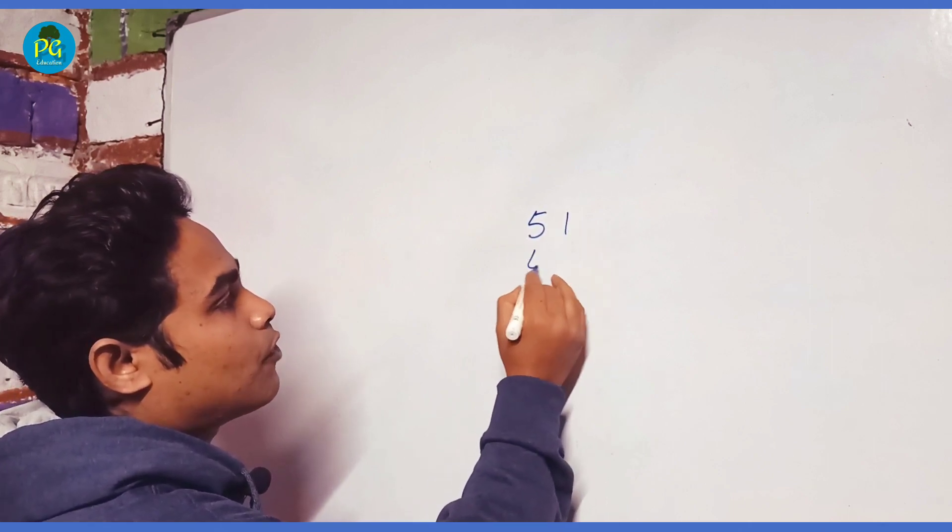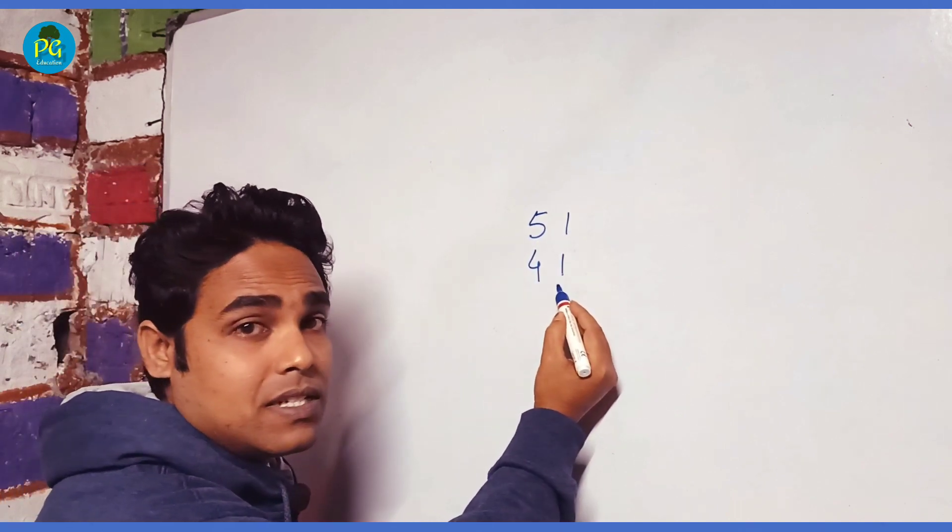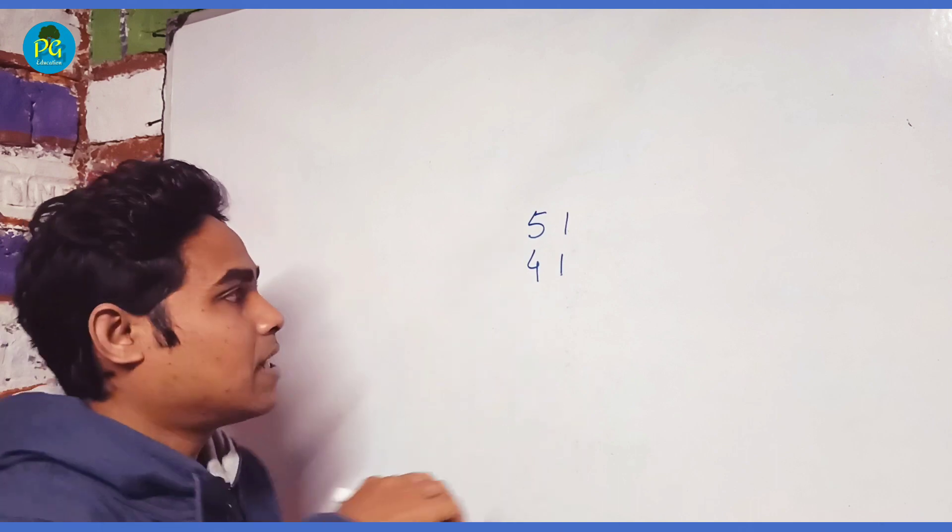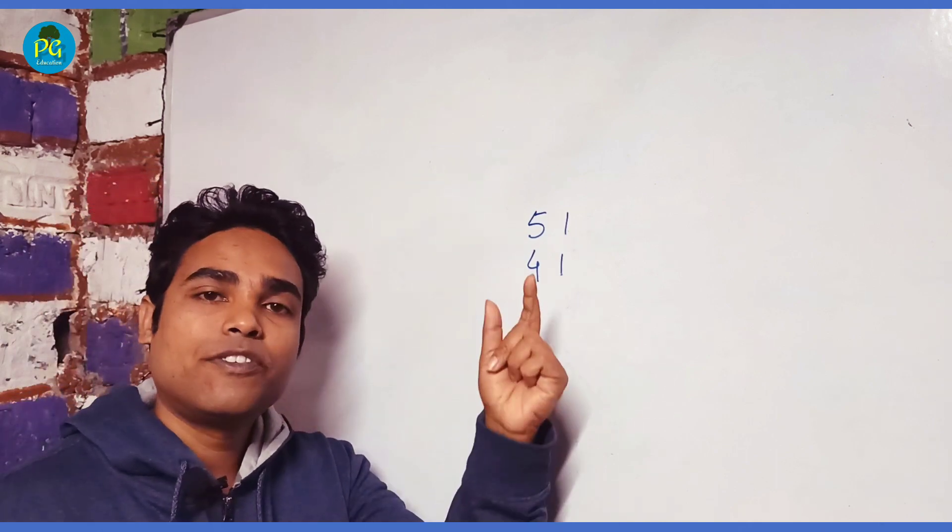Suppose 51 into 41, both of them have unit digits 1. So we will understand how to multiply this type of numbers within a few seconds.